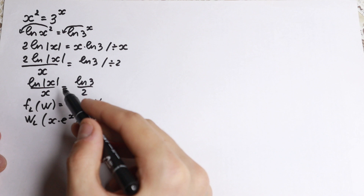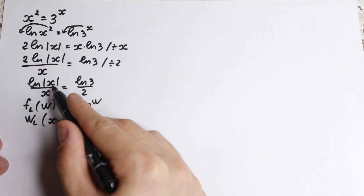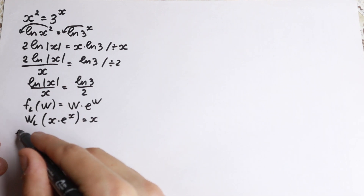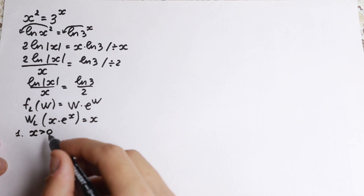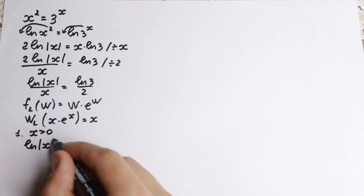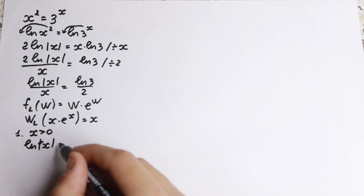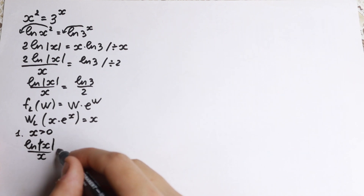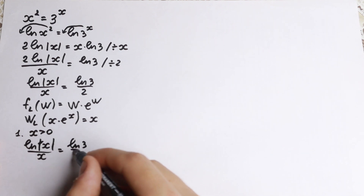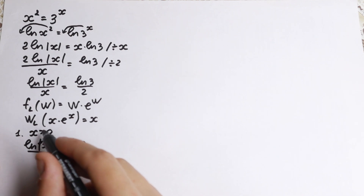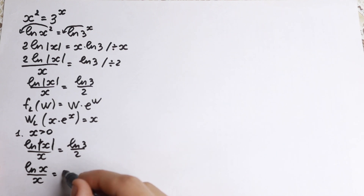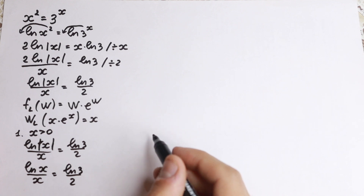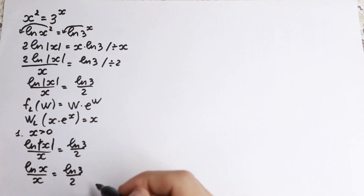With the absolute value we have two cases: x is positive or x is negative. Let's go with Case 1: x is positive. If x is positive, we can remove the absolute value. So we have natural log x over x equal to natural log 3 over 2. Now let's try to create a Lambert W function form from this expression.